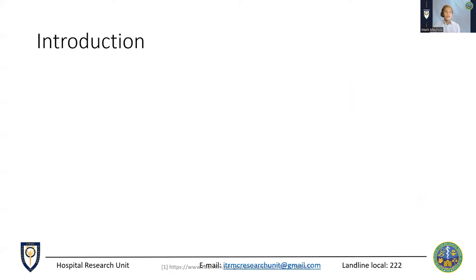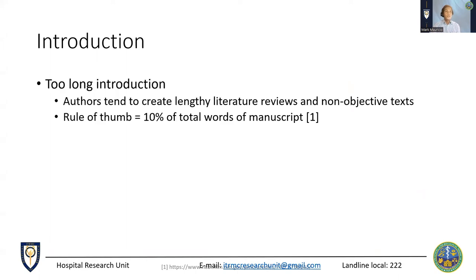Authors often underestimate the introduction — the first section of a manuscript — in both its relevance and its complexity. The most common mistake is writing a too-long introduction. After great efforts to obtain several literature reviews, some authors tend to showcase the number and quality of their literature search and want to share it with others. The major problem is that most readers are not interested in long, non-objective texts. The scope of information in the introduction, including the review of literature, should be concise and relevant. The rule of thumb is to limit the word count to about 10% of the total number of words in the manuscript.